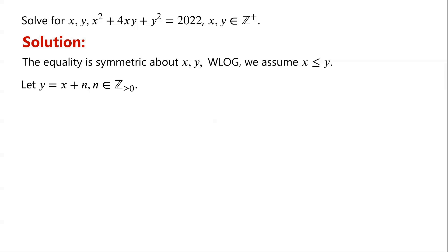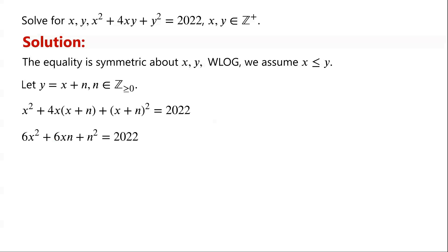We have: x squared plus 4 times x times (x plus n) plus (x plus n) all squared equals 2022. Simplifying the left side, we get 6x squared plus 6xn plus n squared equals 2022.